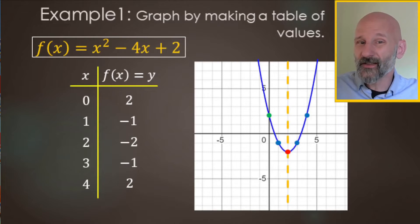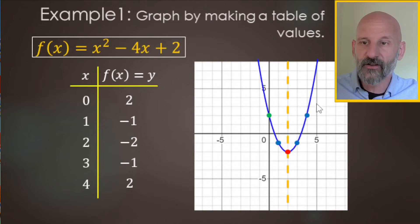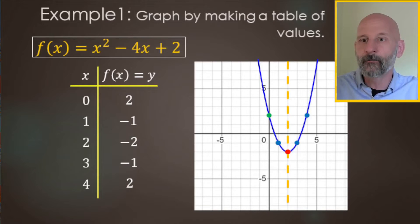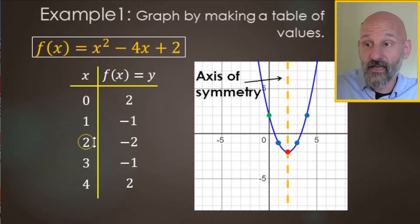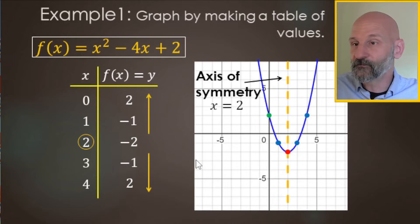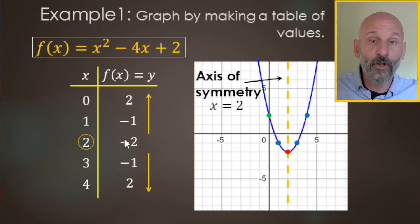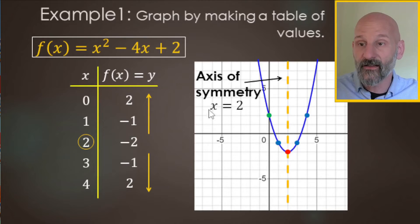Parabolas have a reflective feature — like a mirror image. Right down the middle, you could fold one half on top of the other. That fold line is called the axis or line of symmetry. In our table, the middle y value is negative two, with negative one and two mirrored on each side. The axis of symmetry is where x equals two.